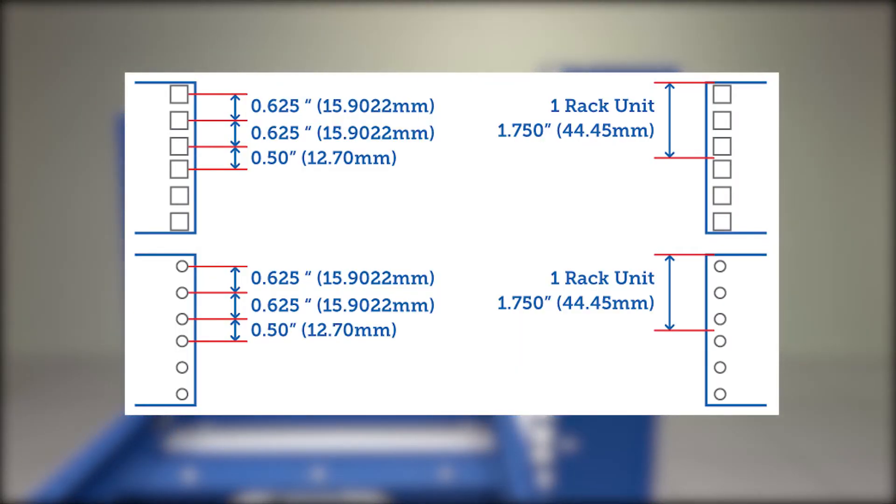As I mentioned earlier, these need to go into the top and bottom holes of your desired U space, and you will also need to make sure that they are at equal heights on every post in the rack.